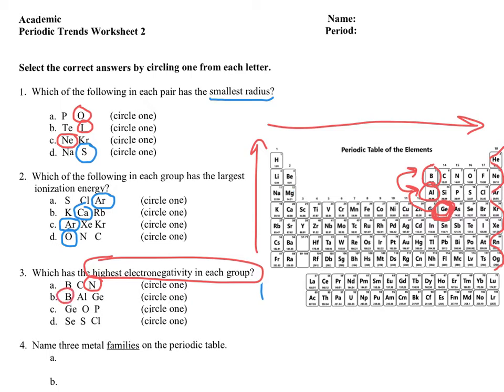For germanium, oxygen, and phosphorus: electronegativity increases as you go up and to the right. Oxygen is the smallest element, and outside electrons are pulled more by smaller atoms because they can get closer to the nucleus, so oxygen is the answer. For selenium, sulfur, and chlorine: since chlorine is furthest up and to the right, chlorine has the most electronegativity and the smallest atomic radius.